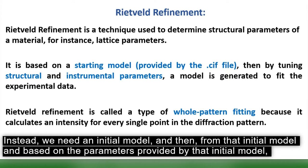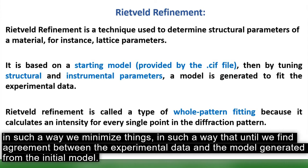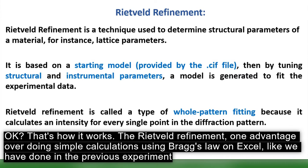Unlike structure determination from scratch, Rietveld refinement requires an initial model. From that initial model, based on the parameters it provides, we perform operations related to the structure of the material and the instrument, minimizing the difference until we find agreement between the experimental data and the model. That's how it works.